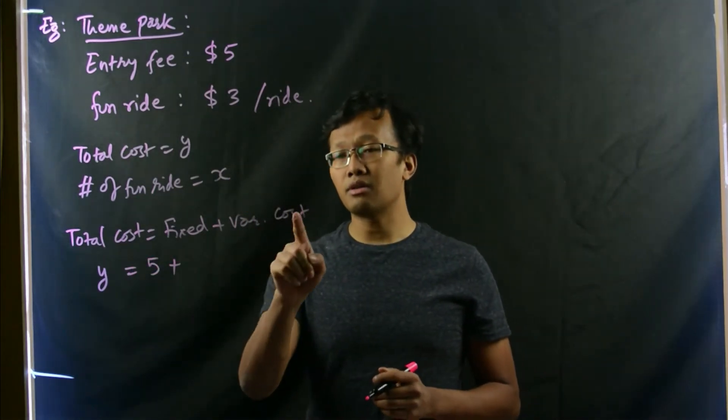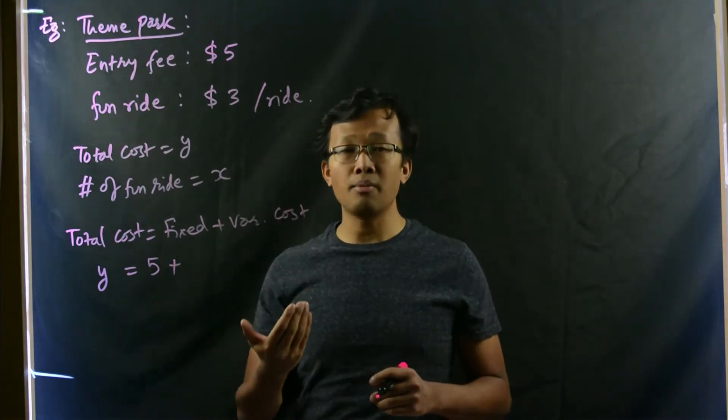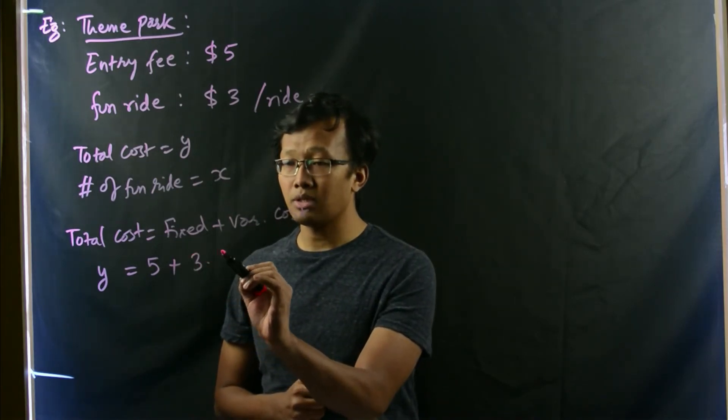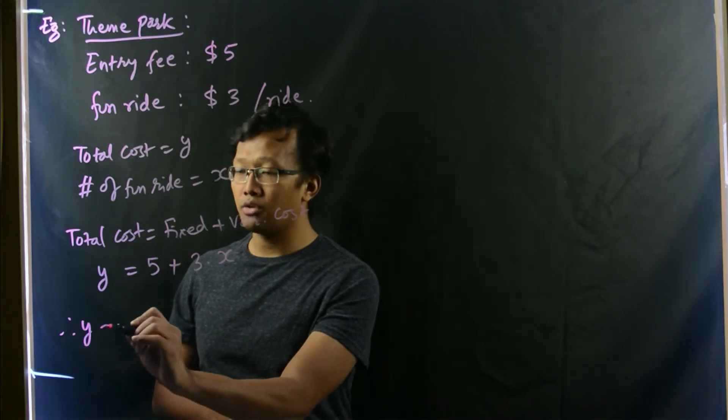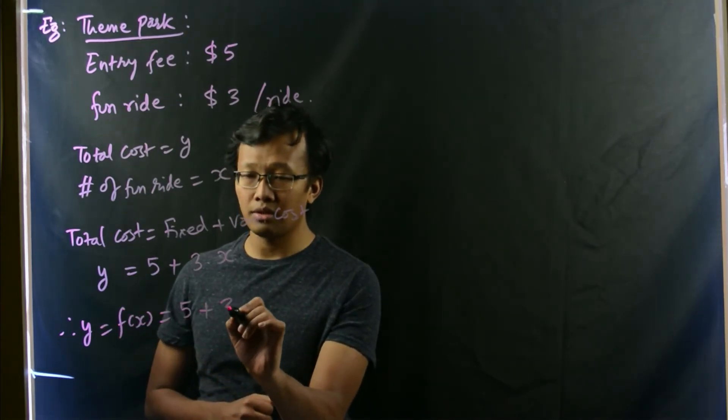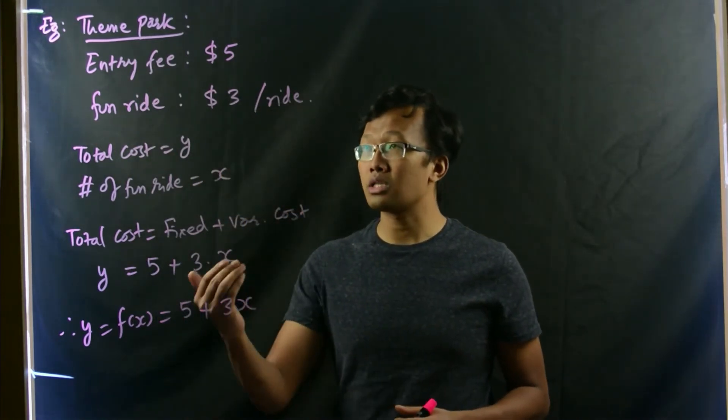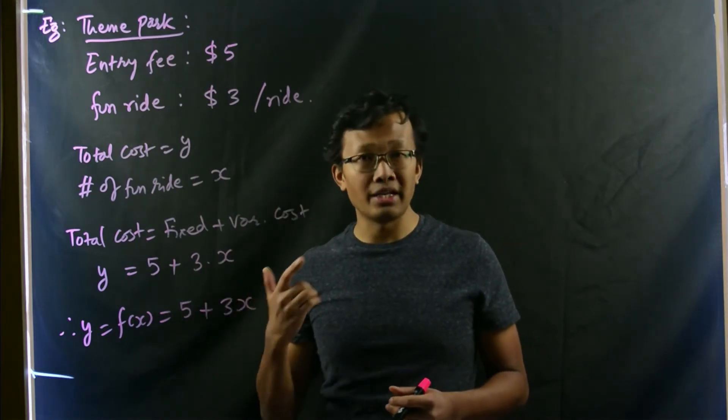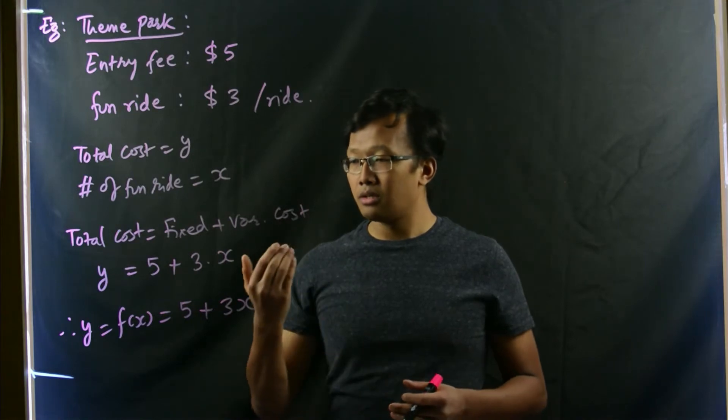In this case, total cost is y and fixed cost is simply $5. That's the entry fee. And variable cost changes according to how many rides you took. That would be simply 3 times the total number of rides. So, this is simply y equals to f of x. The function equals to 5 plus 3x. So, that's our model which governs the total cost for the total fun rides that we did, that one individual did in a day. So, this is the function.